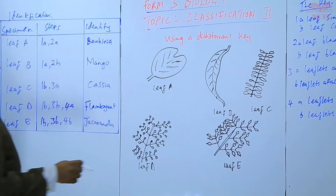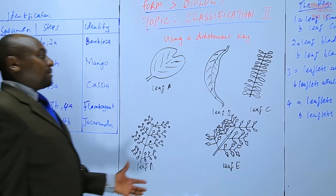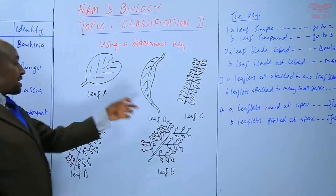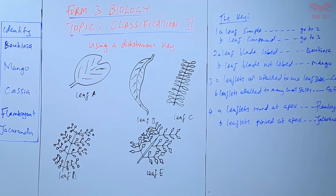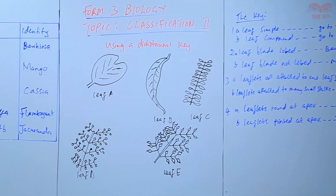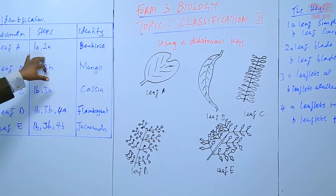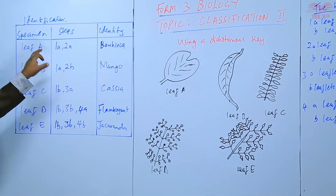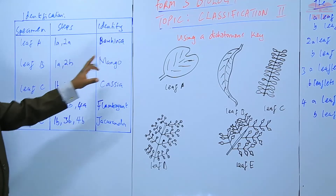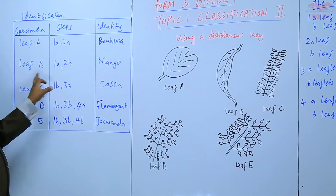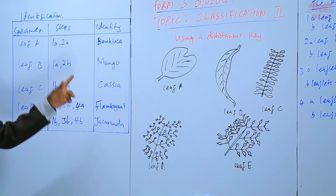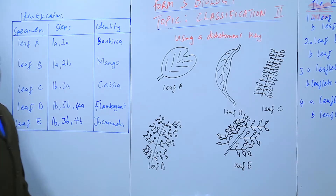So we have used an already prepared key to identify some given specimens. Our task was to use the key for identification by showing the specimen, the steps, and then identifying the specimen. For each of the steps we have arrived at the correct names — the correct identities.